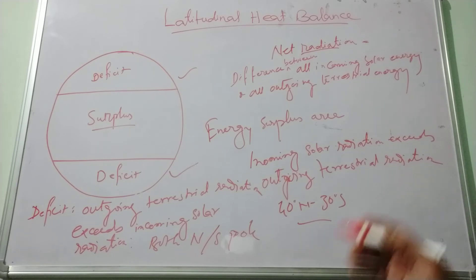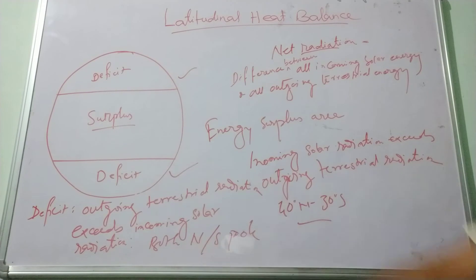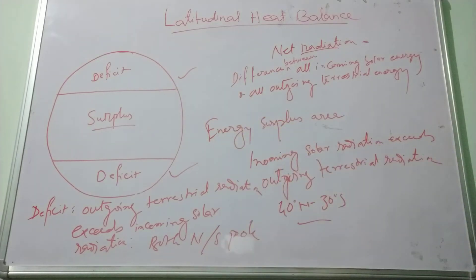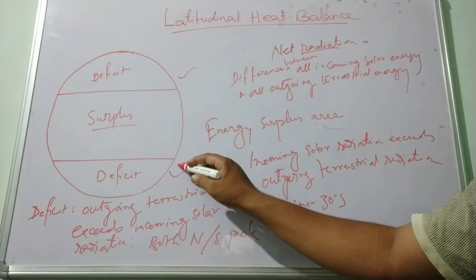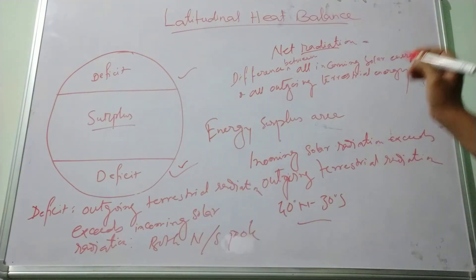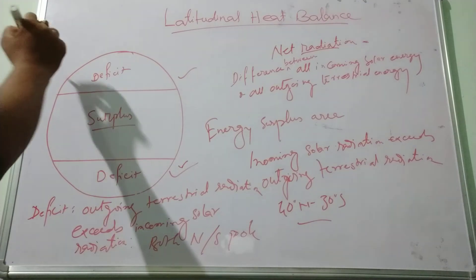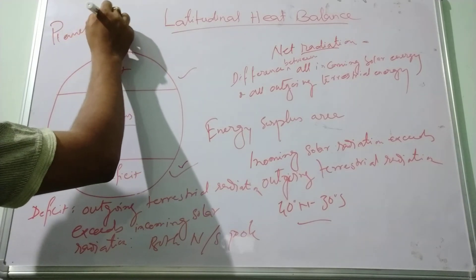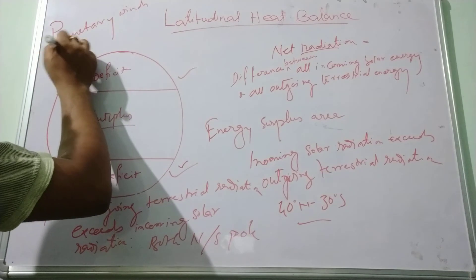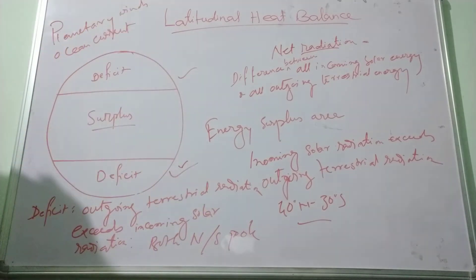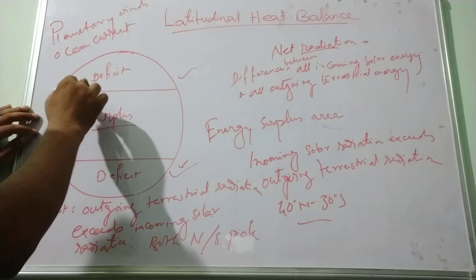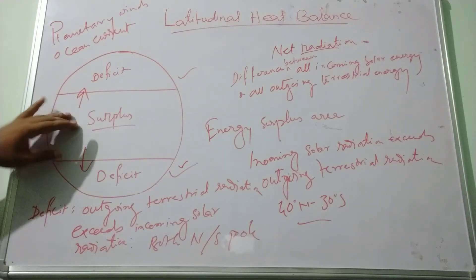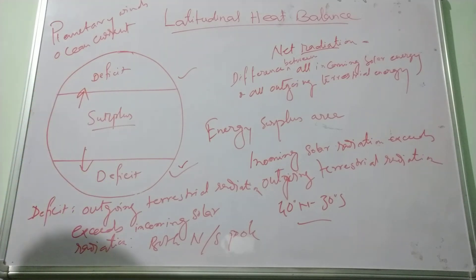However, this situation would have caused the tropics to get progressively hotter whereas the poles would get progressively cooler, and the planet would have been inhospitable except for a few regions near mid-latitudes. On the other hand, the planetary winds and ocean currents help to transfer the excess heat from the tropics to polar regions — that is, from the surplus region to the deficit region — making up for heat loss at the higher latitudes.